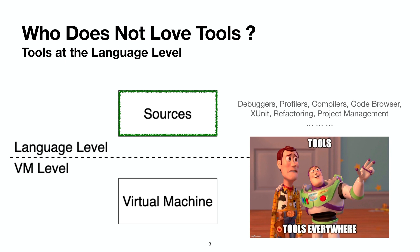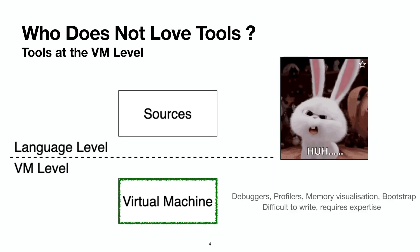At the source level, we actually have a lot of tools: debuggers, profilers, compilers, code browsers, xunits, refactorings, project management, and so many more. However, when we move on to the virtual machine level, we have slightly fewer tools — particularly debuggers and profilers again, and some memory visualization tools. But these are difficult to write and require some expertise.